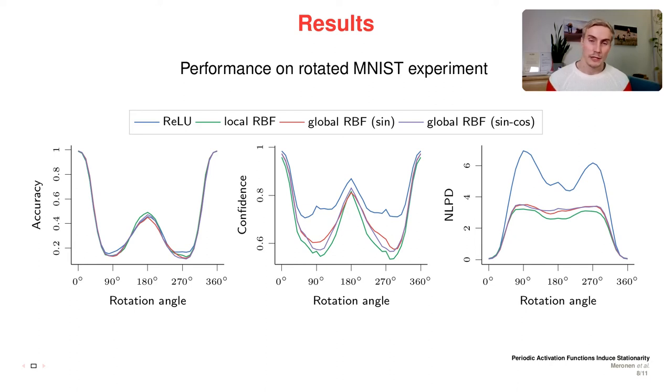We can see that both locally and globally stationary models are much less overconfident compared to the ReLU model, which suggests that they are able to revert back to the prior mean as the rotation angle gets more severe. Similar effect can be observed in the negative log predictive density curve, where lower values are better.